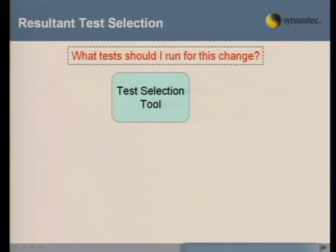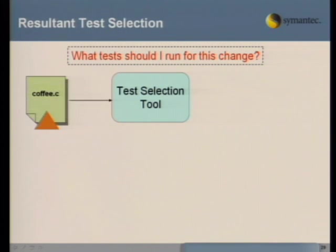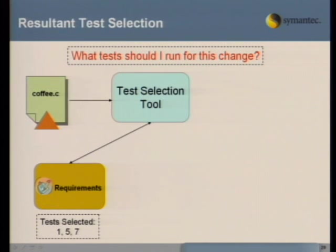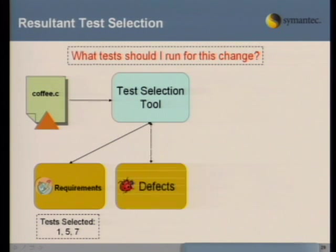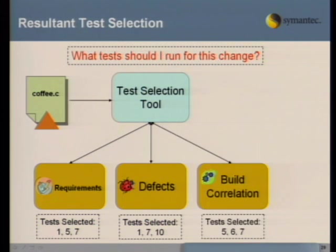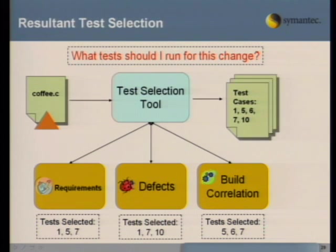In the end, for your resultant test selection tool, you want to answer the question: what tests should I run for this change? Given a change that comes in, you use each method to get a different set of suggested tests. You'll have three methods returning three sets of tests — a set of test cases that may be more useful than whatever you were doing previously, probably staying late and testing as much as possible.